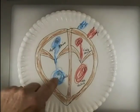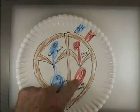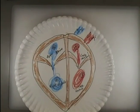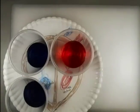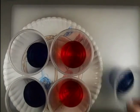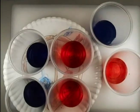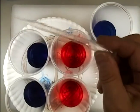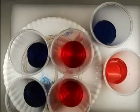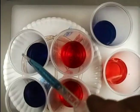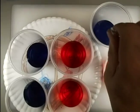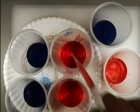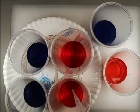Right atrium, right ventricle, to the lungs, from the lungs, left atrium, left ventricle, to the body. Once you have that set up, go ahead and put your cups where they belong, with the gas exchange over by the lungs. Use your pipette — instead of a muscle pumping, use your fingers — and move the blood in the correct order. Practice moving it from spot to spot.